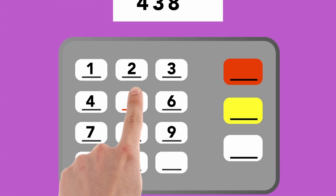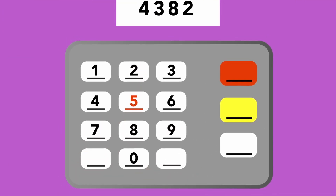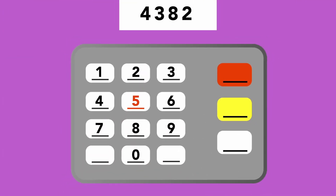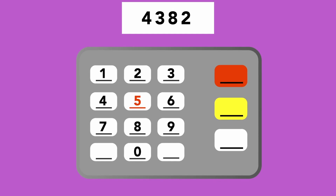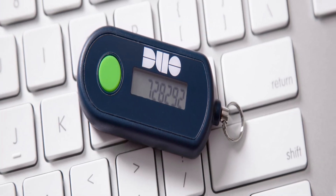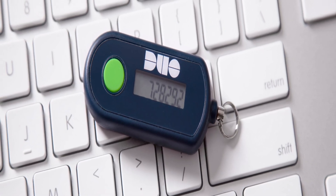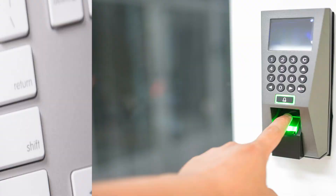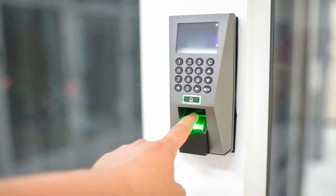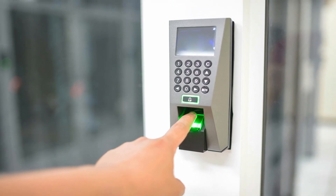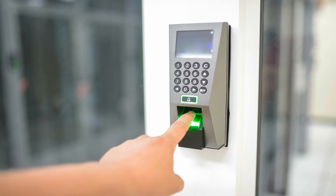Something you know might be something like a password or a PIN — something that only you, or a small group of people, would know in the case of shared passwords. Something you have could be something like a key fob, a phone with an app, or a hardware token. And something you are refers to biometrics — a characteristic that's unique to you, something like your fingerprint or a face scan. We could also combine two or more of these methods, and that's called multi-factor authentication, or MFA for short.